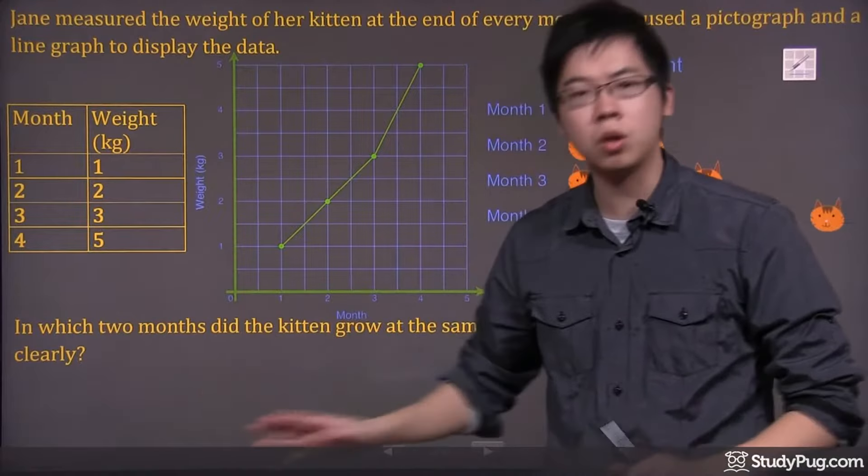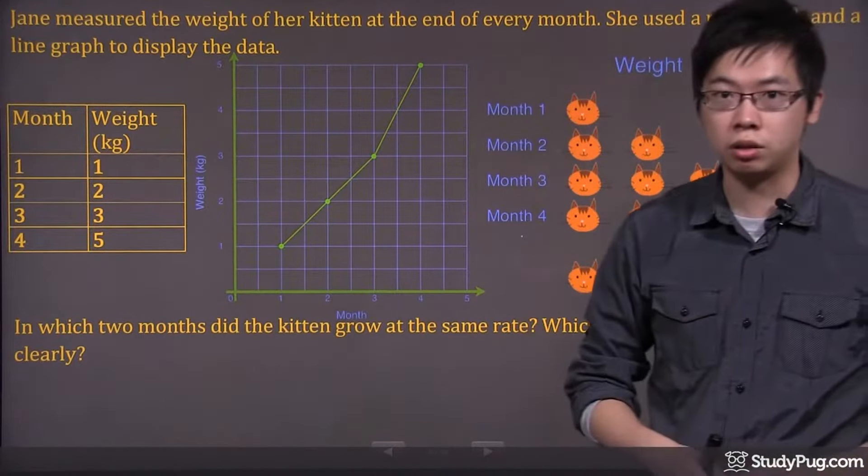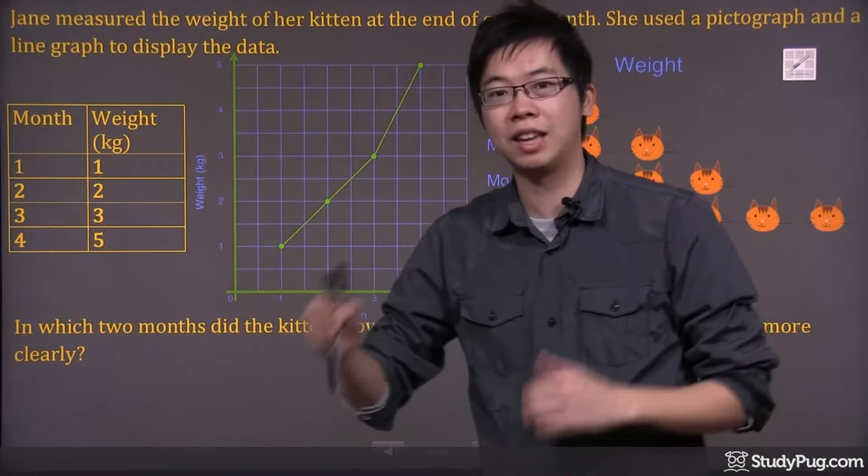The question is asking you, in which two months did the kitten grow at the same rate? These results are taken at the end of the month.